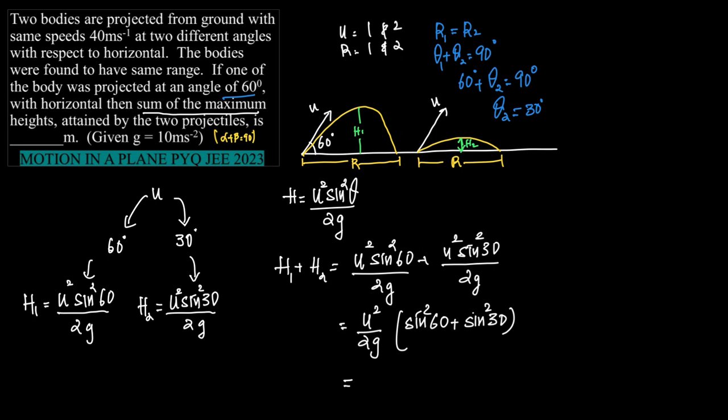Which gives us, what is the value of u? It is given to be 40. So what we have is 40 square the whole upon 2g is 2 into 10, into sin square 60.